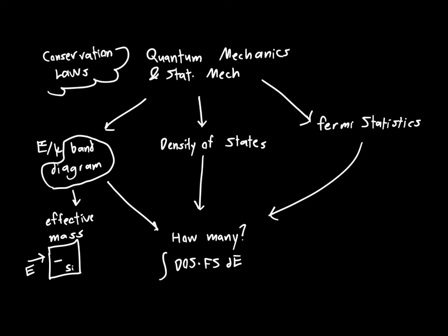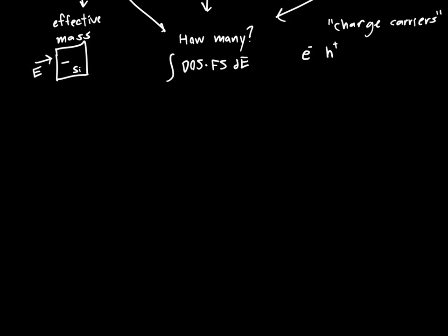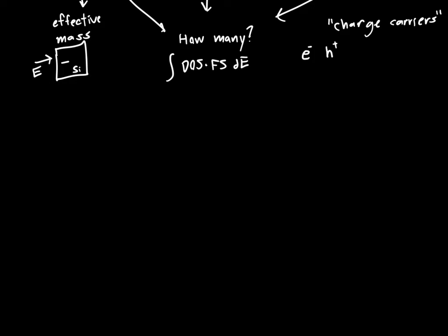So you might ask, why have I been using the term charge carriers? Seems like an awfully complicated term for electron. But in fact, in semiconductors, in addition to having the electron, we have what's called the hole, which just acts like a positively charged electron. And I'll have a video on this later, but just to give you a sense of what's to come and to prepare you for this rather bizarre concept. And so that is all to answer our question of how many. So how many charge carriers are there in the semiconductor?